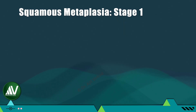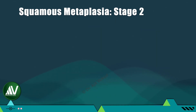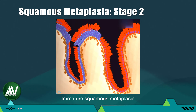The entire process of squamous metaplasia occurs in three stages. In the first stage, called reserve cell hyperplasia, the totipotential reserve cells start multiplying rapidly by mitosis. In the next stage, the multiplying reserve cells start to differentiate into squamous cells, but the conversion is still incomplete — only basal and parabasal cells have formed in some areas, and in others development reaches the intermediate cell layer, but the superficial cell layer is not yet formed. Hence it is called the immature squamous metaplasia stage.